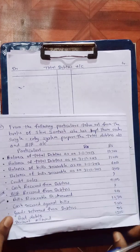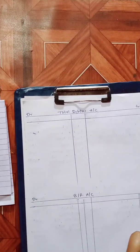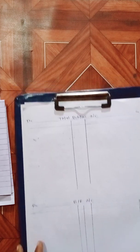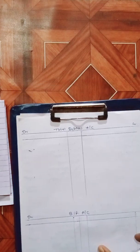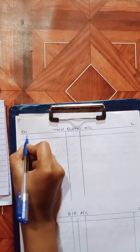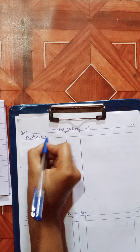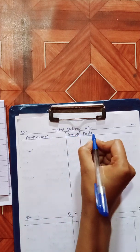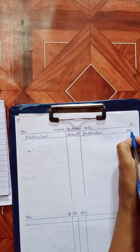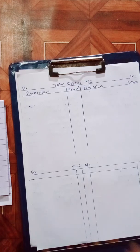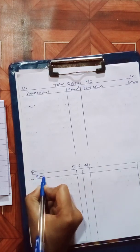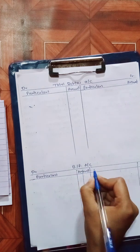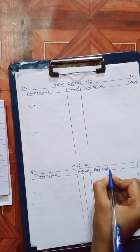Now we begin the solution. Starting the total debtors account — debit side, record the opening balance. Particulars and amount on the debit side, particulars and amount on the credit side. Then bills receivable account — particulars and amount on both sides.